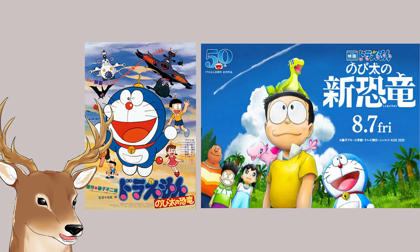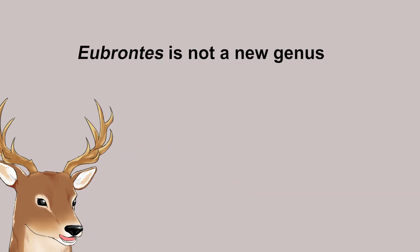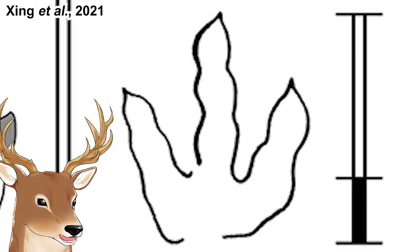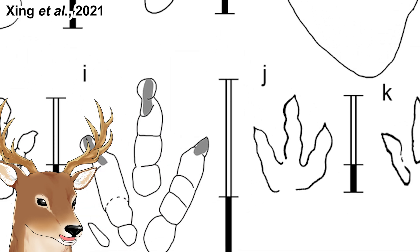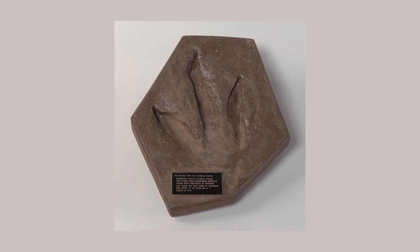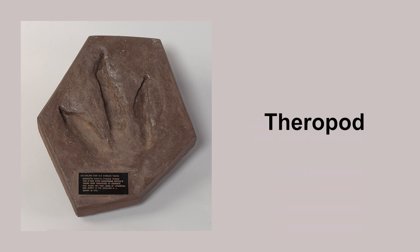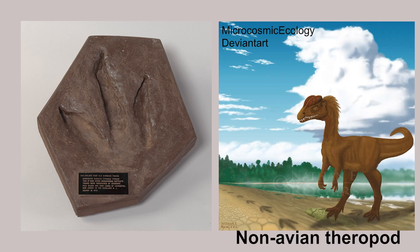Why, you ask? Well, apparently in one of the movies, Nobita's dream is to have a dinosaur named after him — so in a way, the scientists were making his wish come true. By the way, Eubrontes is not a new ichnogenus; it's quite a well-known one. Several tracks identified as ichnogenus Eubrontes have been found from Europe to mainland Asia and even Australia. When first discovered it was thought to be a footprint from a big bird, but it is now believed to be from a non-avian theropod, like Coelophysis or perhaps Dilophosaurus.